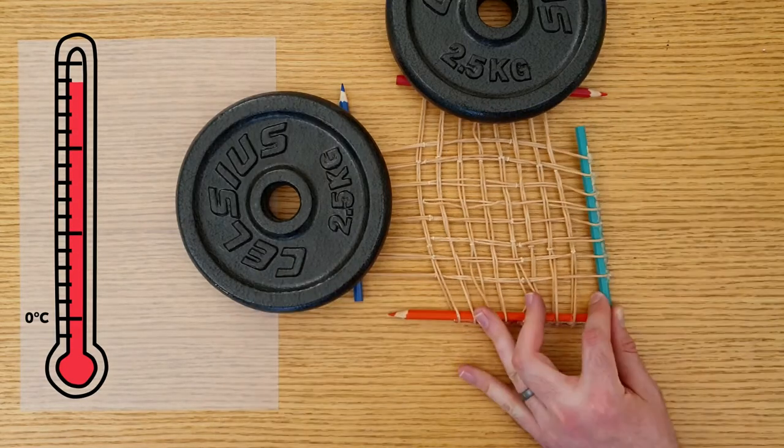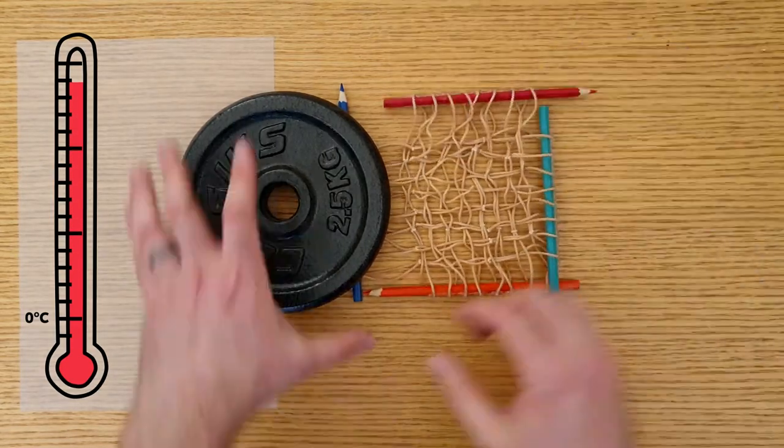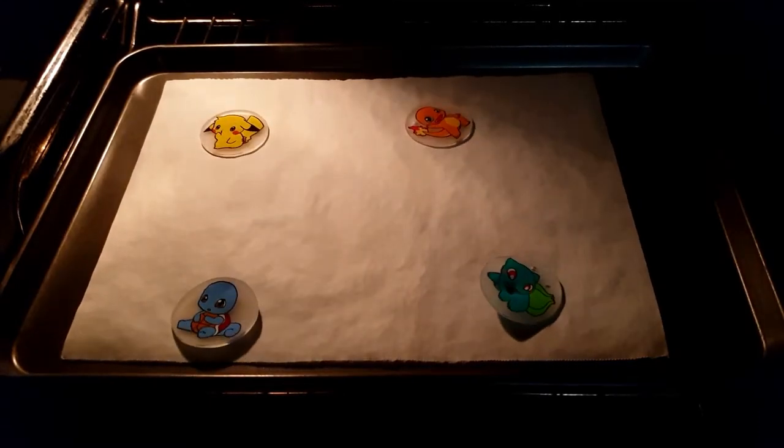The plastic softens in the oven, and the polymers are able to return to their original position, making the drawing smaller in the process.